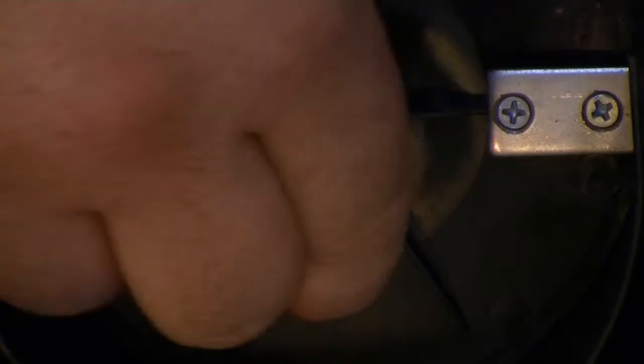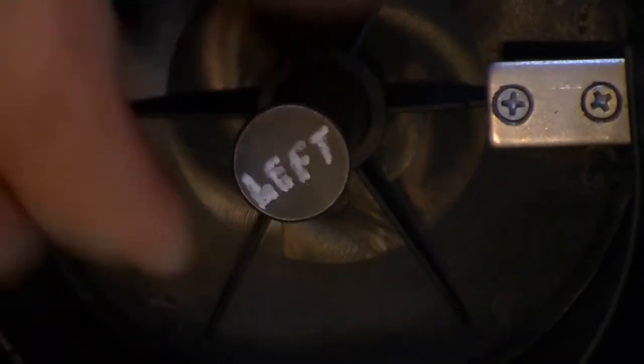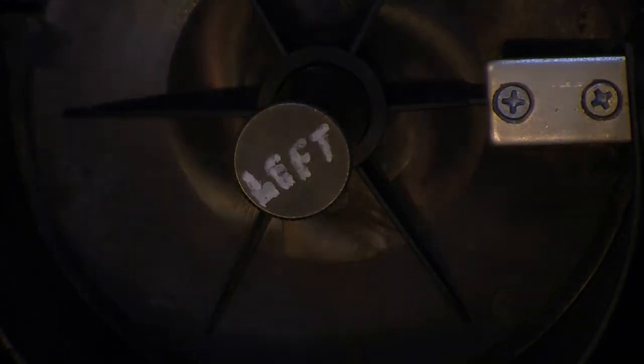Some spool guns, such as the Everlast SN200, use a left-hand threaded screw to hold the wire spool in place. This is done to prevent friction from loosening the screw while the spool is rotating. It's a good idea to mark the head of the screw to serve as a reminder.